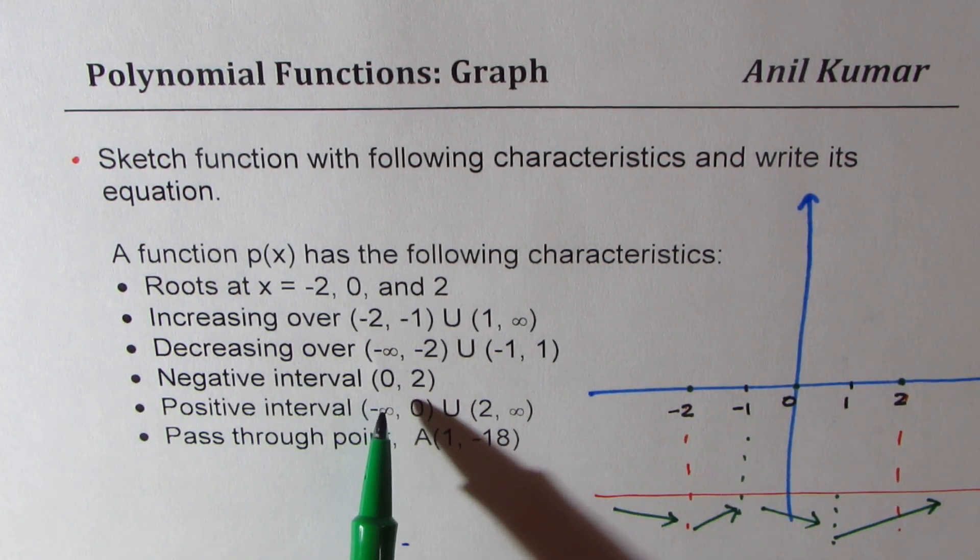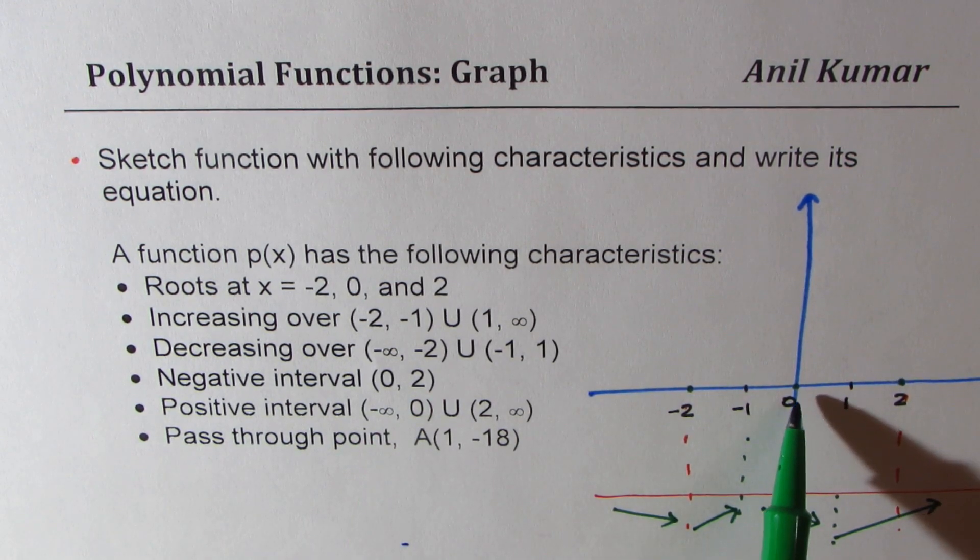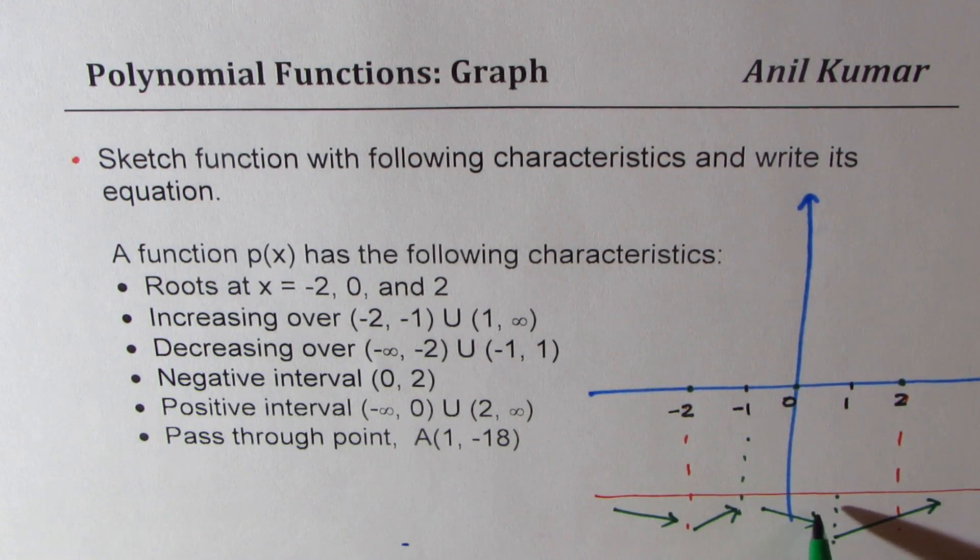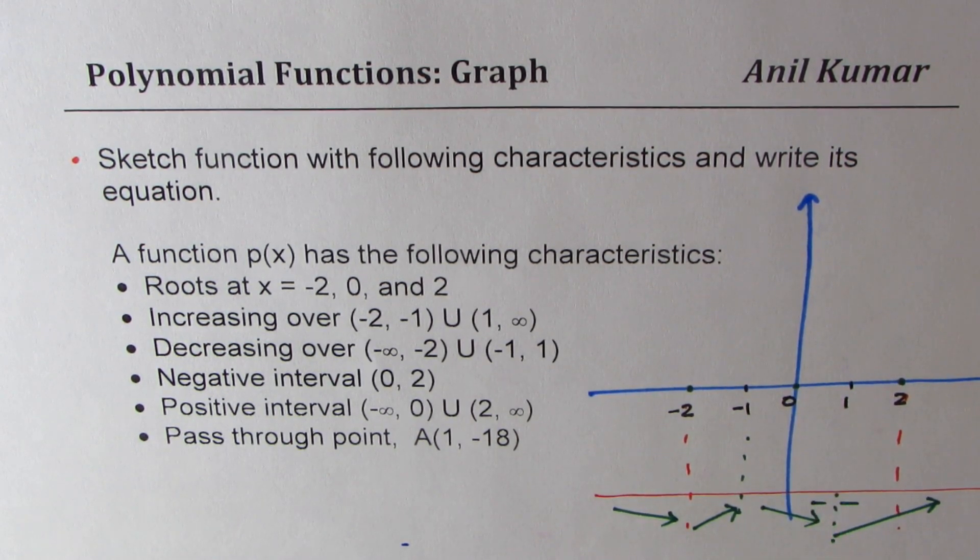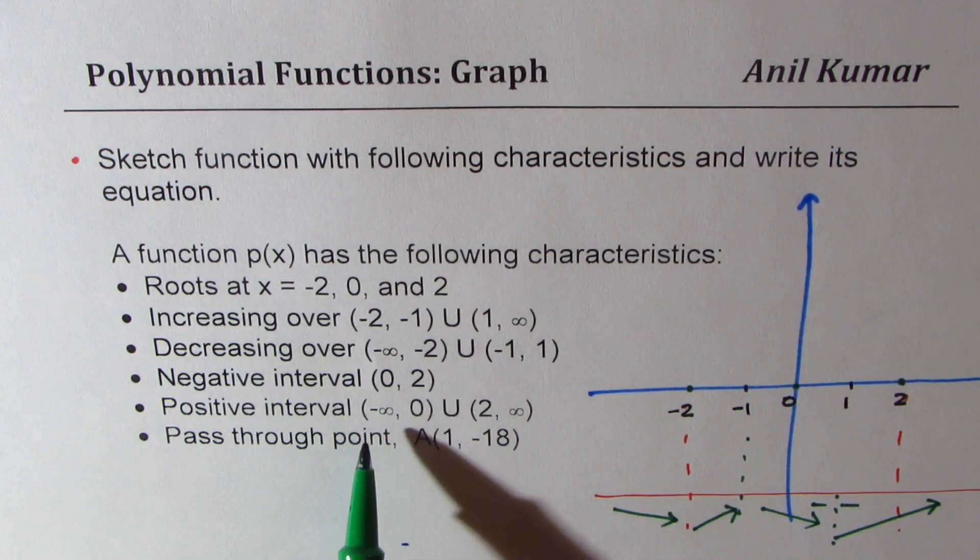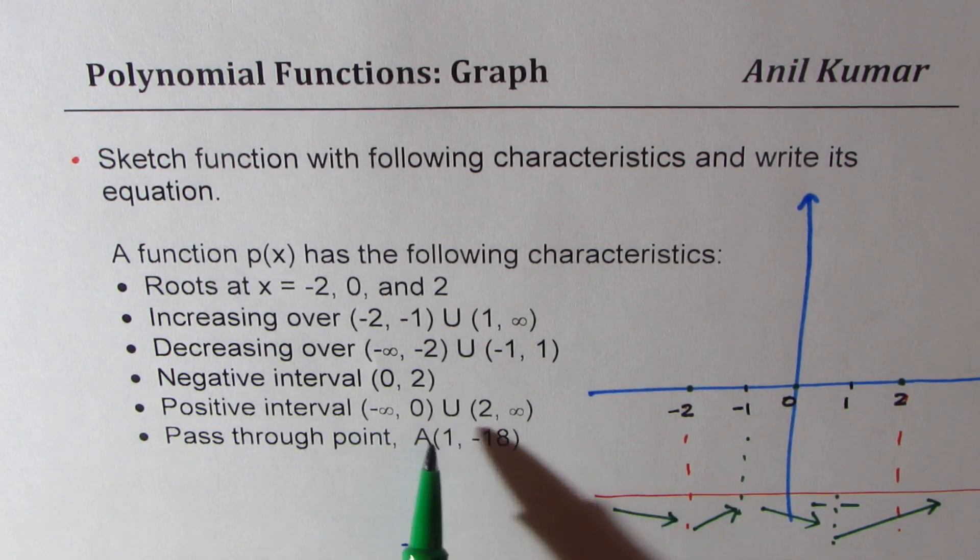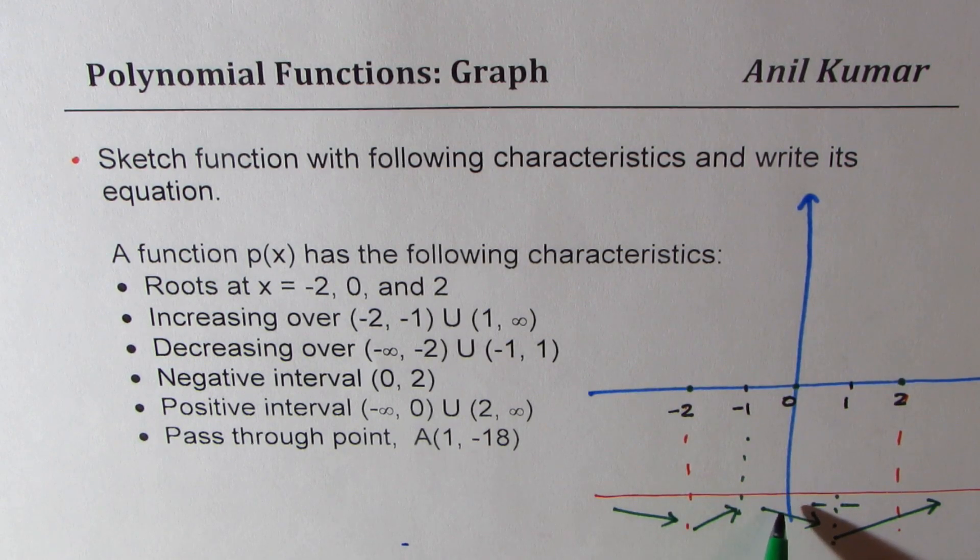Negative from 0 to 2. So from 0 to 2 the part is negative. So let me write negative here, from 0 to 2. And it is from negative infinity to 0, and thereafter it is not negative. So it is only negative in this interval.